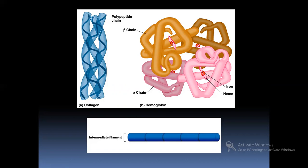Fibrous proteins can be defined as polypeptide chains that lie parallel to each other to form a fiber. In globular proteins, the polypeptide chains intermix or intertwine with each other to form spherical structures. Fibrous proteins are water insoluble and very stable to pH and temperature changes, whereas globular proteins are water soluble but very sensitive to changes in pH and temperature.